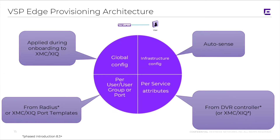As you recall in the first video, we demonstrated the ability to automate the global configuration, which was applied during the onboarding to XMC/XIQ. For the infrastructure configuration, we used AutoSense as the feature, which was able to determine multiple modes of connectivity — ranging from direct fabric interfaces all the way to Fabric Attach, and even EAP/NEAP and voice-type services for IP phones. We also demonstrated RADIUS support for per-user, per-user-group, or port, and the ability for XMC/XIQ port templates. What we didn't talk about in detail was DVR — Distributed Virtual Routing — and the role it will play, particularly in the per-service attributes for Fabric to the Edge. That's really what we're going to cover here in this video.